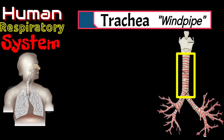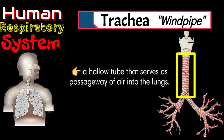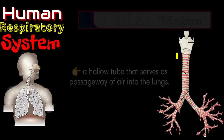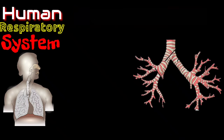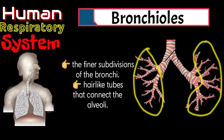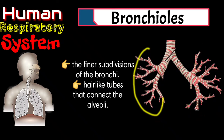Trachea, or windpipe — this is where air passes from your nose to your bronchial tubes and lungs. Your trachea or windpipe splits up into two bronchial tubes. These two tubes keep splitting up and form your bronchioles. Bronchial tubes are branching tubes that connect the trachea to the lungs. Bronchioles are the final subdivisions of the bronchi — hair-like structure tubes that connect to the alveoli.